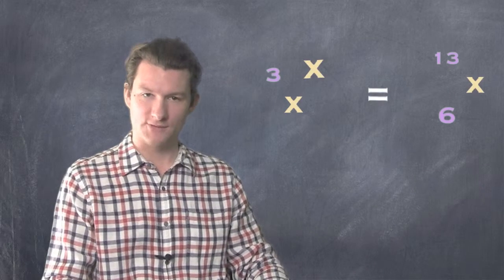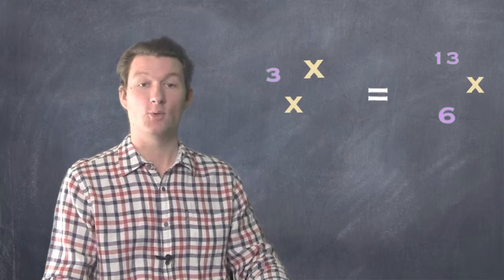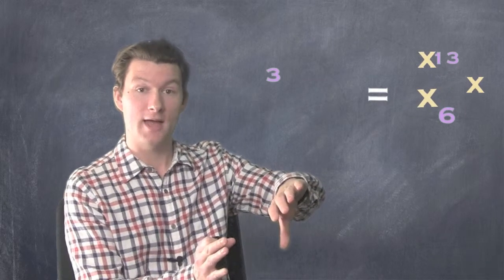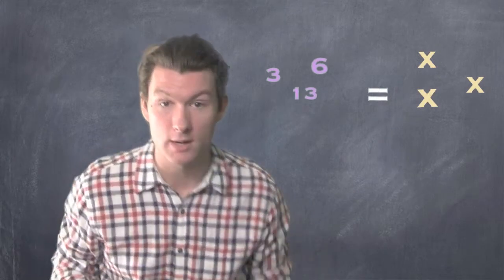What if you have an equation with variables on both sides and numbers on both sides? What you got to do is move all the variables on one side of the equal sign and move all the numbers on the other. Let me show you what I mean.